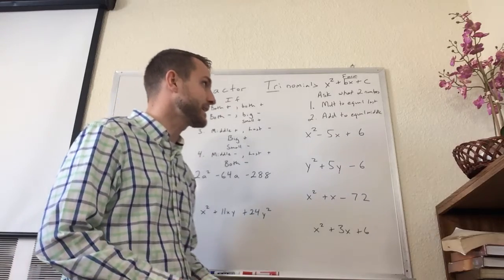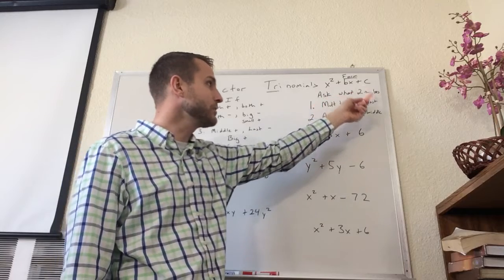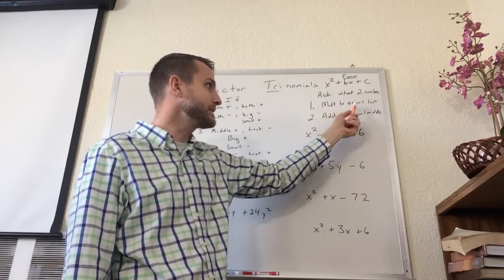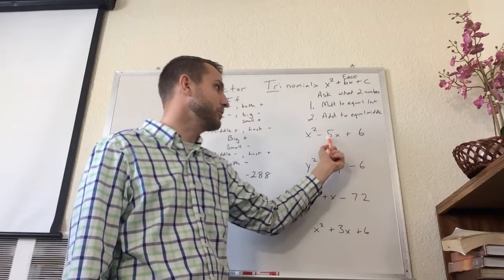The way that I factor these is I ask two questions about the numbers. I ask first of all what two numbers multiply to equal the last term and then add together to equal the middle term.